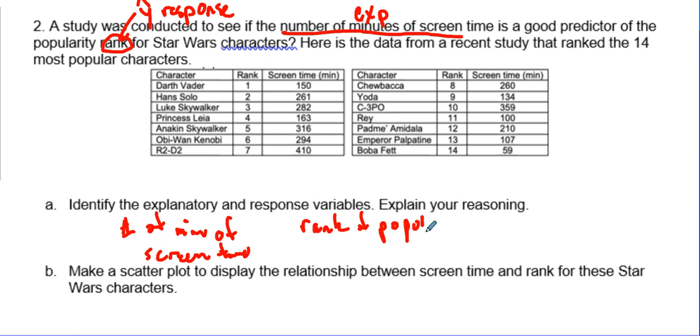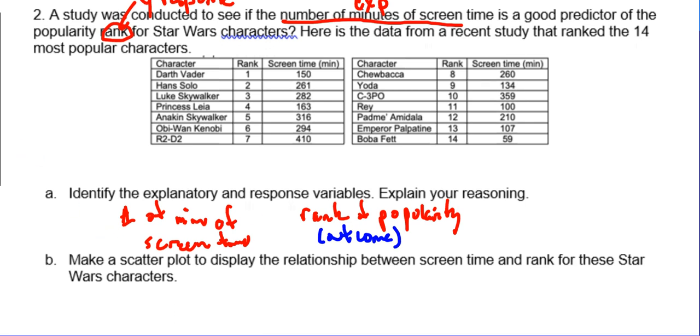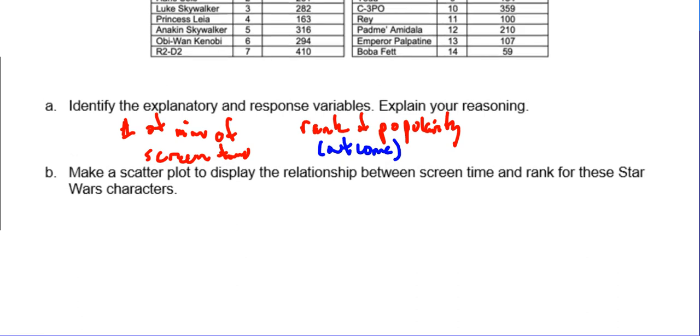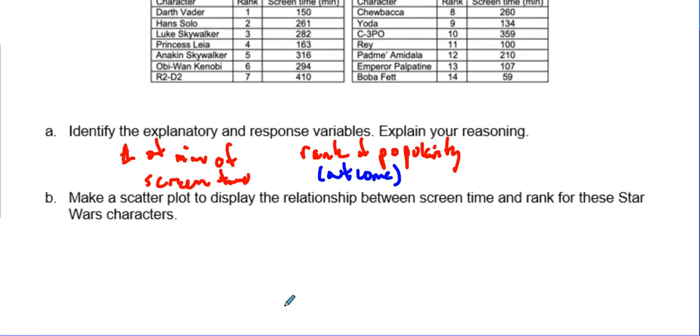And so that's the outcome of our explanatory. This is an outcome and this is our what we use to predict. So with that we're gonna make a scatter plot to display the relation between screen time and the rank of the Star Wars character. So here we go.